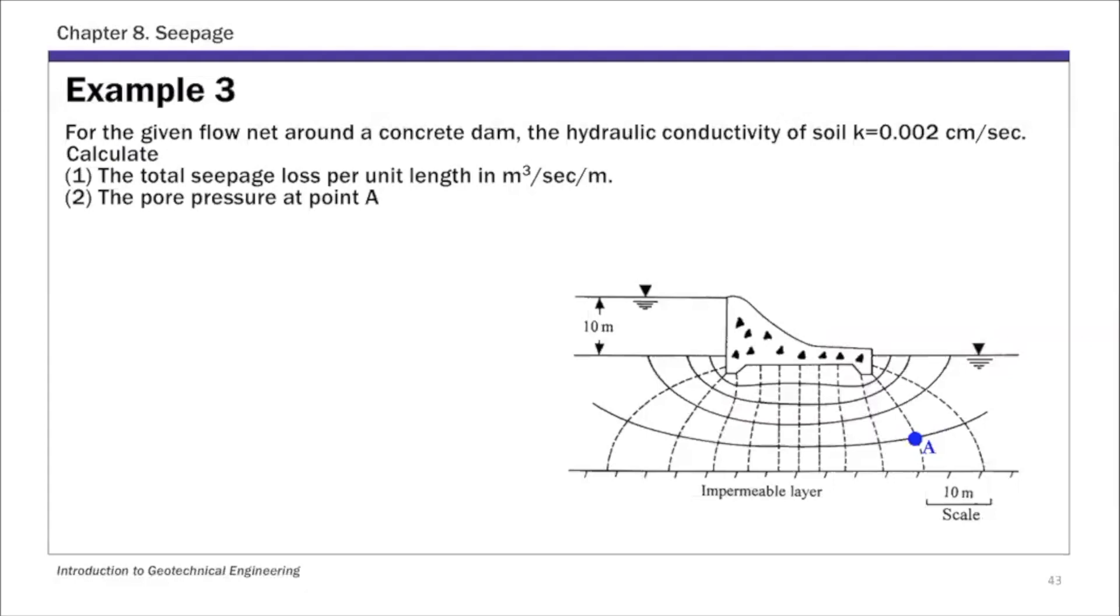So this is the third example of Chapter 8. This is a seepage problem. If it's not given explicitly in the problem statement, we're going to assume the L/B ratio, so L over B equals 1. L is the length of the flow element, and B is the width. We're going to assume this ratio for both examples 3 and 4.